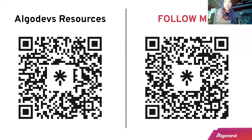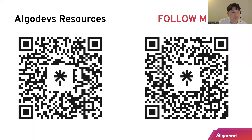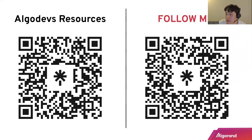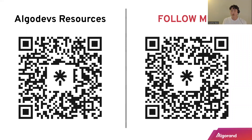Q&A: How to get access to all the sample code? Scan the QR code on the left — it has the slide deck and the two GitHub repositories with all the code shown today. Is there any reason to prefer the previous methods over Beaker? It depends on preference — do you want something familiar with complexity abstracted away, or do you want to get your hands dirty with bare PyTeal and customize deeply? Beaker definitely makes it simpler and easier, but if you want to go all-in on PyTeal you can still do that.